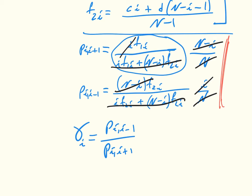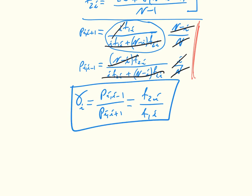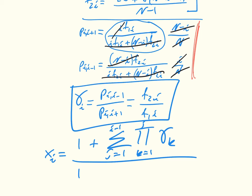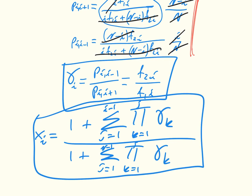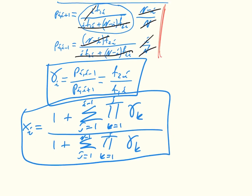We can use the expression for A, B, C, D defining F to write down Xi. This is a theorem we've looked at before: Xi equals the sum from J equals one to I minus one of the product from K equals one to J of gamma_K, divided by one plus the sum from J equals one to N minus one of the product from K equals one to J of gamma_K. This gives a quick way to calculate the fixation probability of one type invading another.